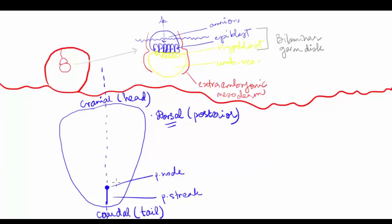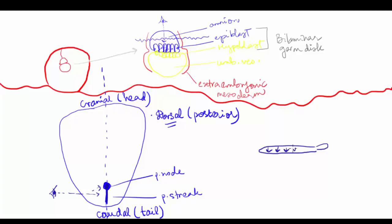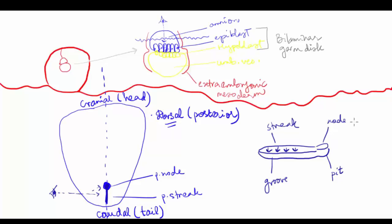What happens next in gastrulation is that this proliferation of cells develops an invagination, which means the cells basically go downwards in the middle — denoted by this darker shade of blue going through the middle of the streak and the node. Looking at it sideways, you would see the node and the streak, with cells going down and invaginating, creating a depression. This is the primitive node, the primitive pit, the primitive groove, and the primitive streak.